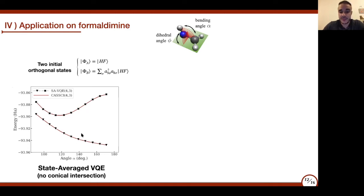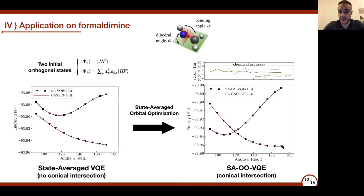But if we include the state-average orbital optimization and run the SA-OO-VQE approach until convergence, we end up with a very nice conical intersection in the spectrum. The red curves now represent the state-average CASSCF reference. We compute the energy error and we are always below chemical accuracy, and we reproduce the conical intersection at exactly the same point. It seems that we are mimicking the state-average CASSCF classical method, which is known to be a good one for describing conical intersections.